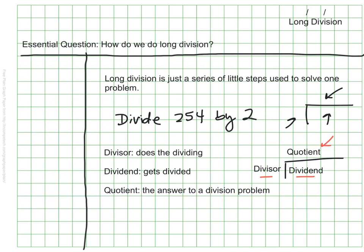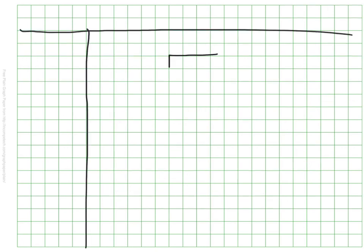So remember our example before was to divide 254 by 2. Let's set this up as a long division problem and see how that looks. So in my example, 254 is being divided. It's what's getting broken up. It is the dividend. So it goes inside. And I'm going to be careful here as I write this that they each get their own little space in my graph paper.